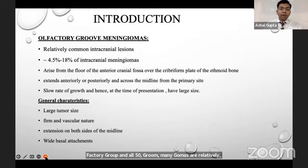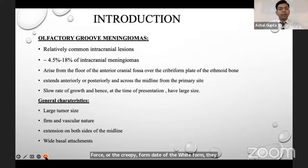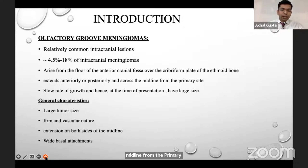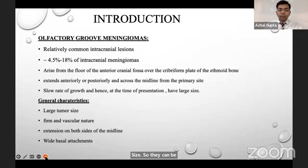Olfactory groove meningiomas are relatively common intracranial tumors, constituting 4.5 to 18 percent of intracranial meningiomas. They arise from the floor of the anterior cranial fossa or the cribriform plate of the ethmoid bone, and can extend anteriorly, posteriorly, or across the midline from the primary side. They show a relatively slow rate of growth and hence present at a large size.